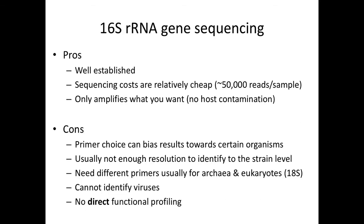The major pros of 16S sequencing are: it's well established, well documented, and has been published many times. There's a wealth of literature to help you work with 16S. Shotgun genomics is more of the Wild West right now — it's improved in the last couple of years but tools are just now starting to come out. 16S is also a lot cheaper, since for each sample you only need about 50,000 reads. Also, since the 16S gene isn't in humans, you won't get much human contamination in your 16S data.